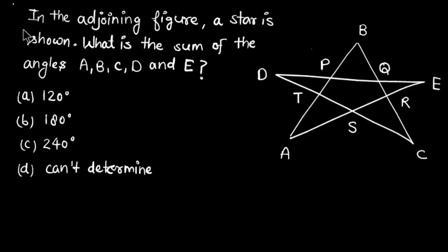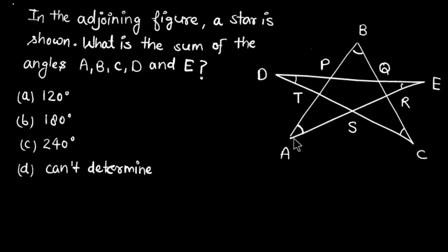Hey guys, welcome back to Solution Mitra. Here we have an interesting question. In the adjoining figure, a star is shown. What is the sum of the angles A, B, C, D, and E? These are the angles formed at the corners of the star. The options are 120, 180, 240, and can't be determined. Let's see how we solve it.